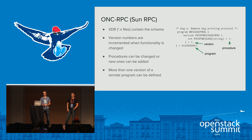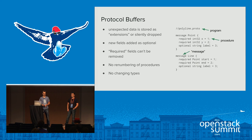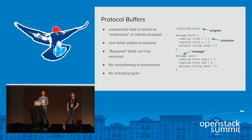At the same time, more than one version of a remote program can be defined, and each version can have more than one procedure defined. Another solution is Protocol Buffers — they don't have explicit versioning, but are designed so that old and new services with different schema definitions can still communicate. Depending on the implementation, unexpected data is either stored as extensions or silently dropped. New fields should be added as optional, meaning old data can still be loaded successfully, and you should keep the field ordering.